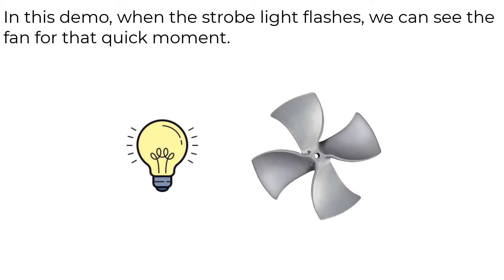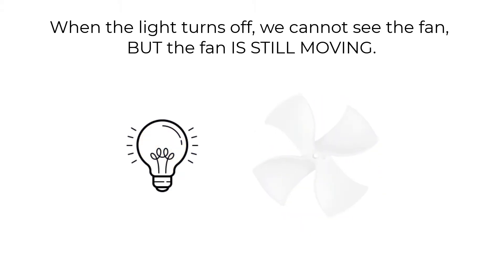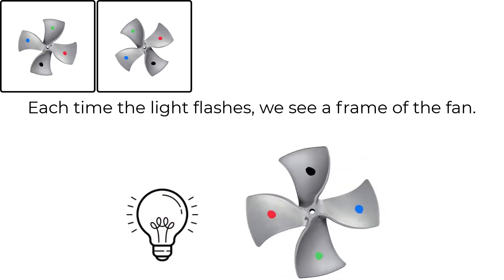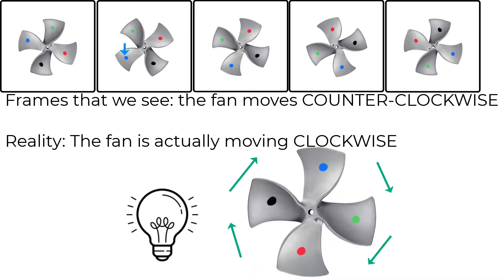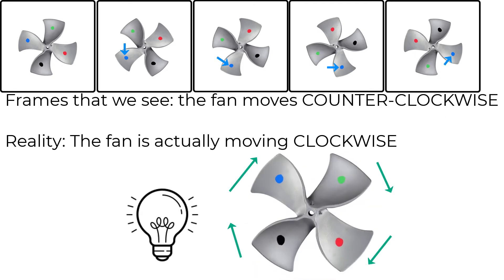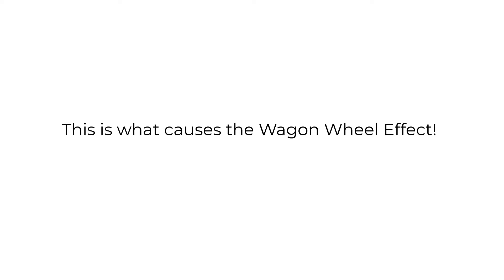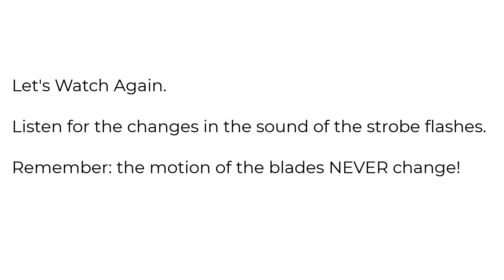When the strobe light flashes, we can see the fan for a quick moment, but when the light turns off it still spins — we just can't see it. Every time the light flashes, we are seeing a frame of the fan. You'll notice that the fan, while spinning clockwise, appears to move counterclockwise in the frames. We interpret it as spinning counterclockwise because of the frames we are able to see — this is what causes the wagon wheel effect.